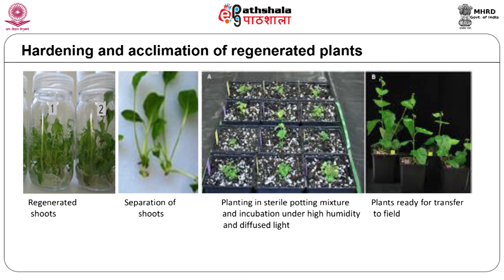The plants are then removed from the culture vessel and planted into an appropriate potting mixture. At first they are maintained under controlled light, temperature and humidity conditions of a greenhouse, and finally transferred to the field under natural conditions. The whole process of plant culture from growing explants in vitro to obtaining complete plants growing under natural conditions may take as long as 4 to 6 months.